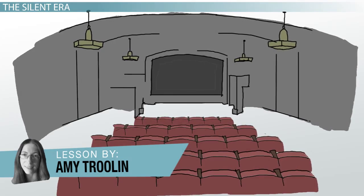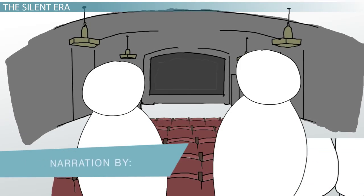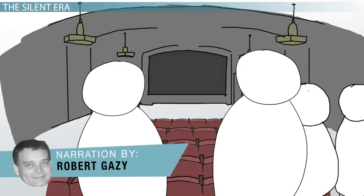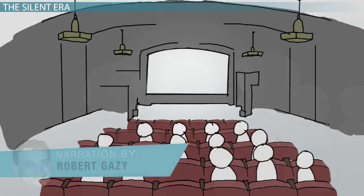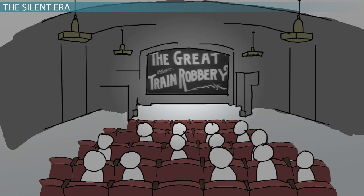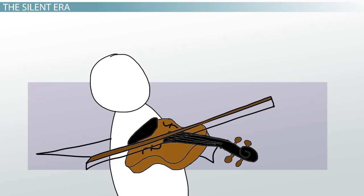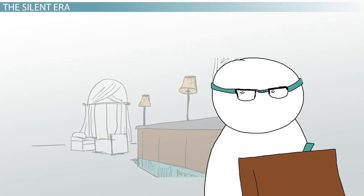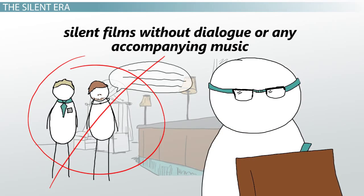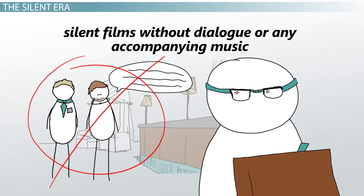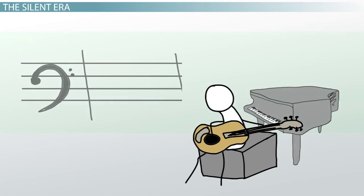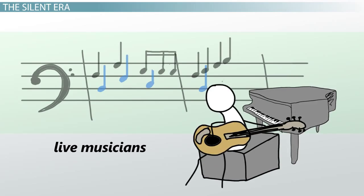It's 1925, and you're at the movies, getting ready to watch a brand new western with your favorite cowboy stars. The lights dim, the opening credits flicker across the screen, and the orchestra begins to play a rollicking introductory piece. That's right, orchestra. Movies in 1925 were still silent films, without dialogue or any accompanying music. Theaters hired live musicians to add music to films.